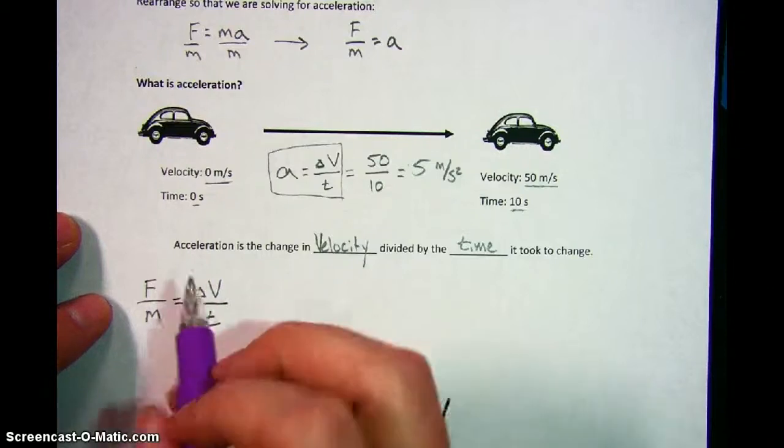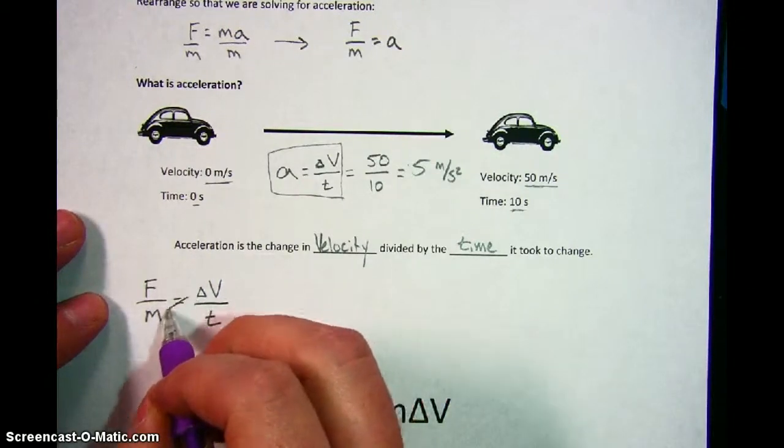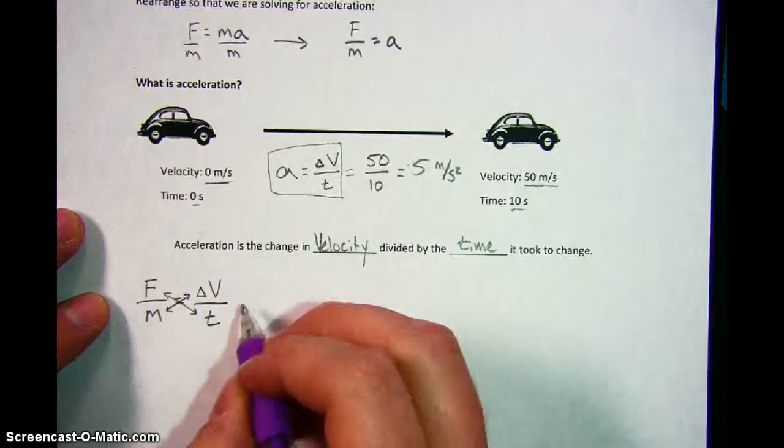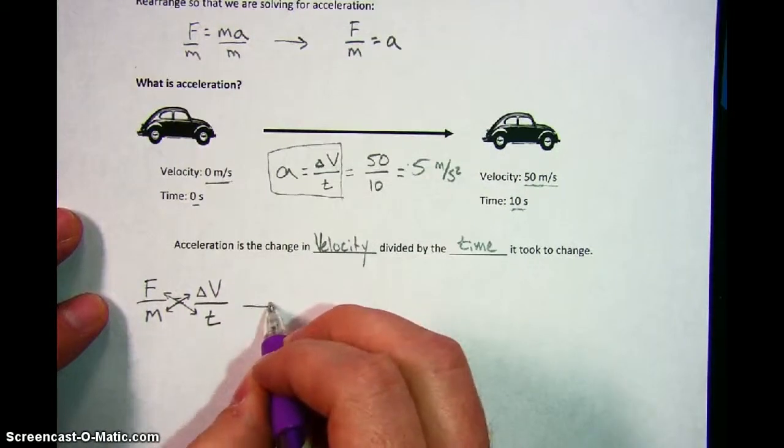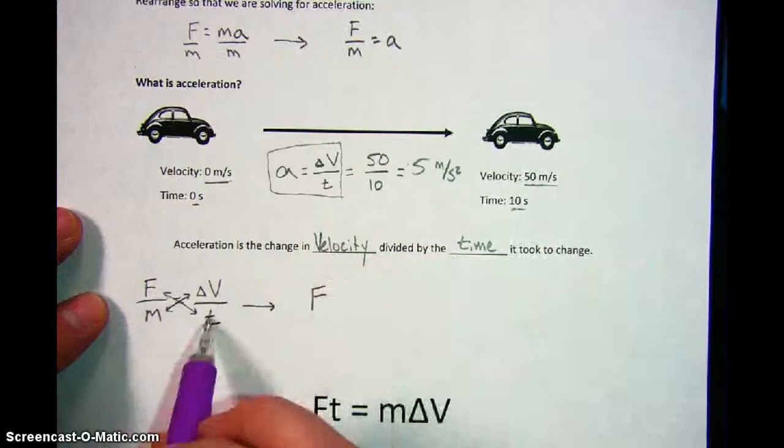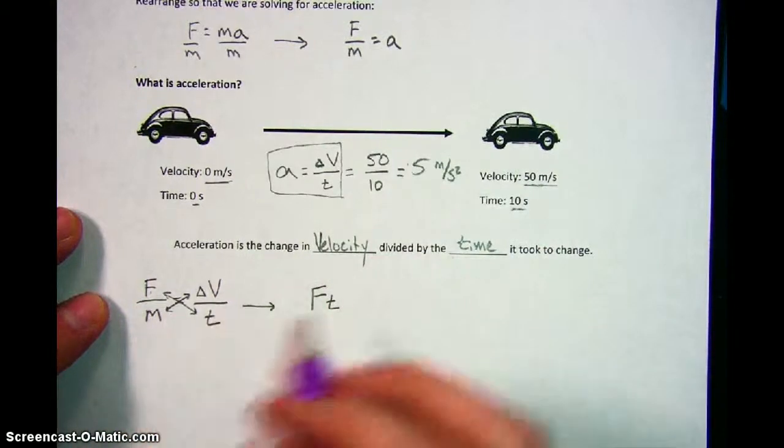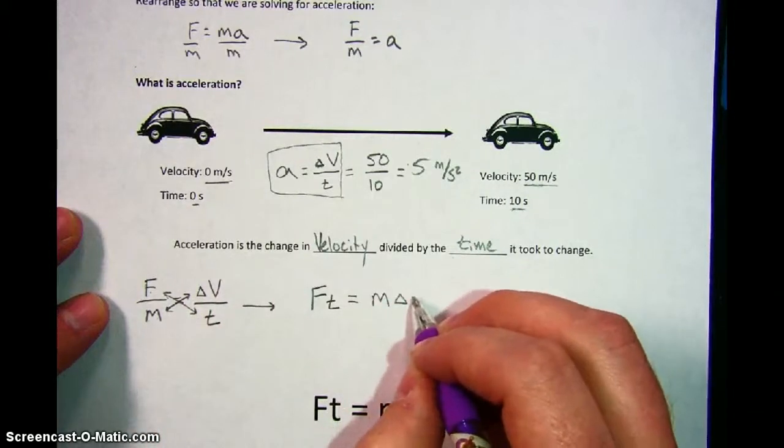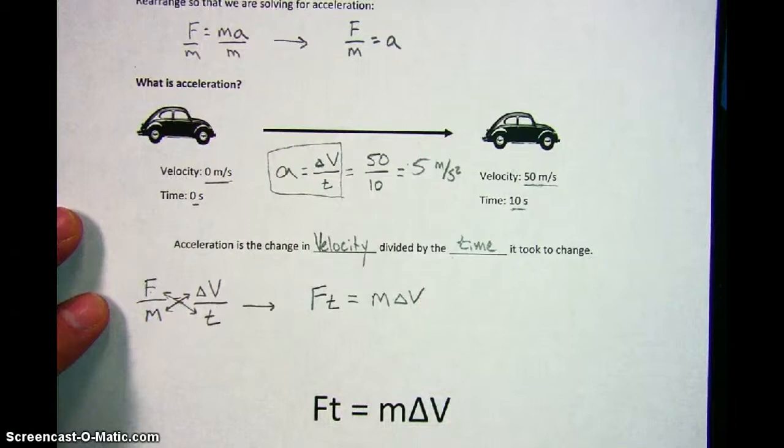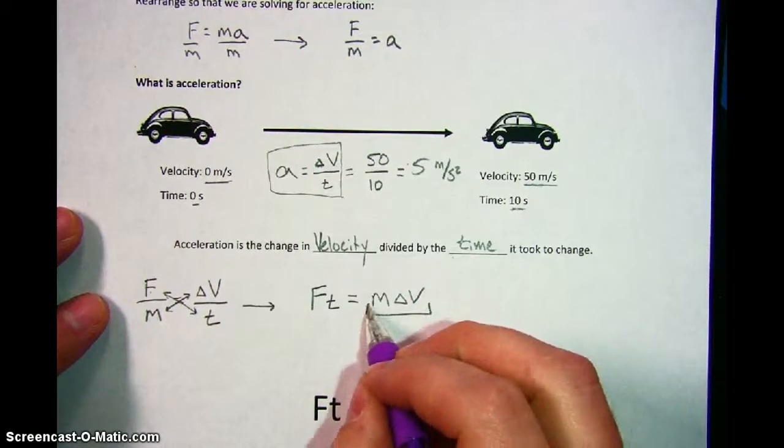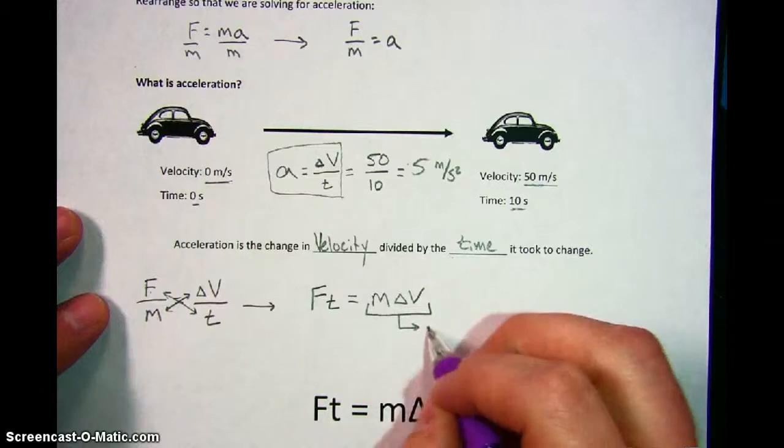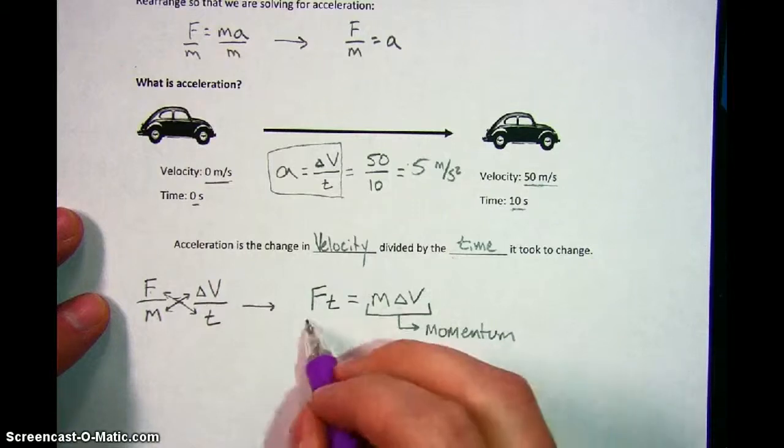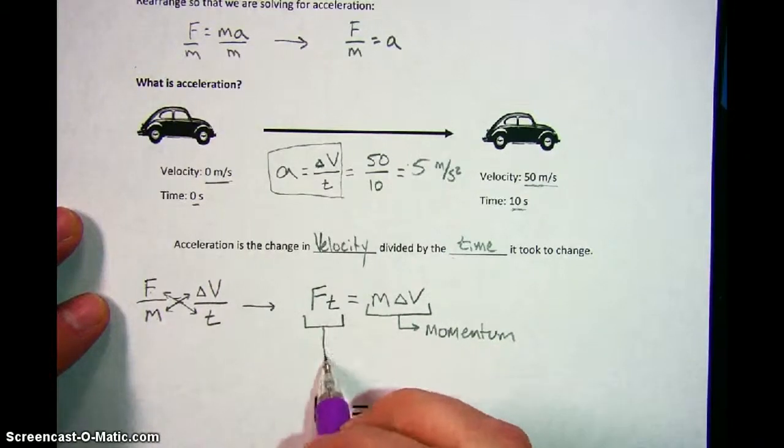In math, you can do this thing called cross-multiplying. The way that you do that is you would multiply those two and set them equal to the multiplication of those two. This is called cross-multiplying. What you're going to get is F times T, and that's going to be equal to the other two, M times delta V. Now here's why we did that. Check it out. M times the change in velocity is what we already know, that's momentum, the mass times the velocity. When we did the F times the T, that is impulse.